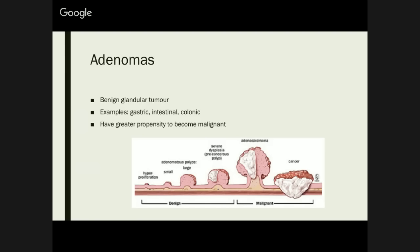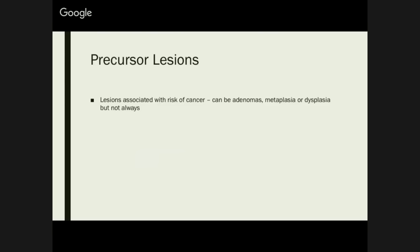For adenomas, they're basically benign glandular tumours. Adenocarcinomas are your malignant glandular tumours. These also have a greater propensity to become malignant. A general concept is that anything that grows outside of what would be considered normal has a greater propensity to become malignant. Precursor lesions are any lesion associated with the risk of cancer — it can be one of those we just talked about.